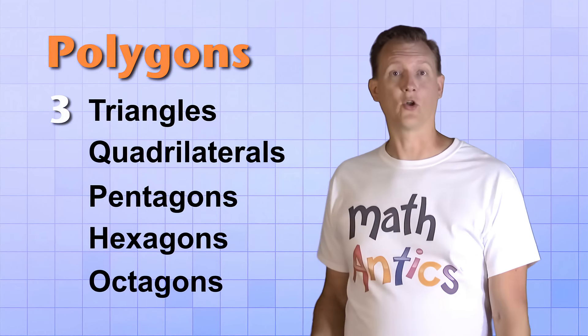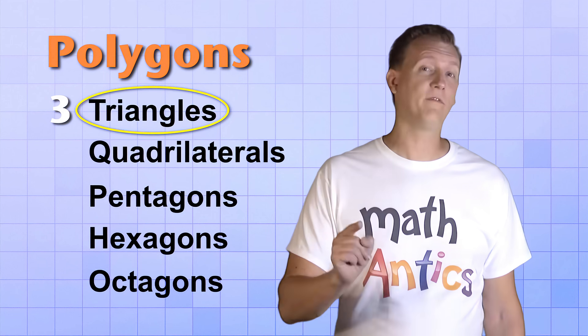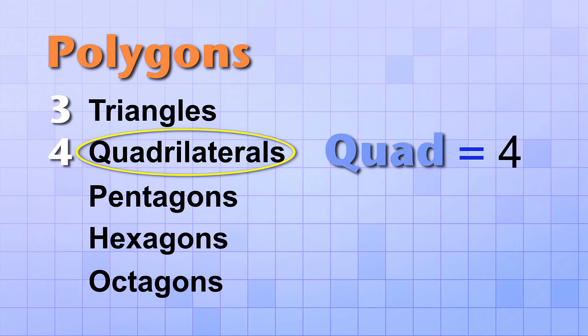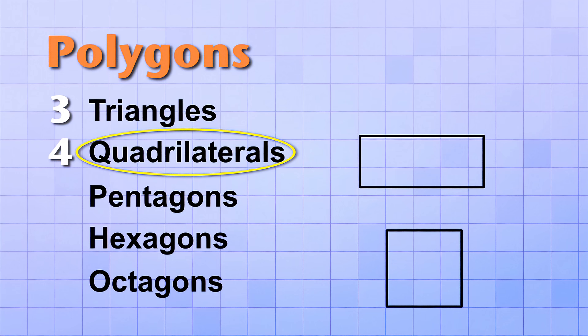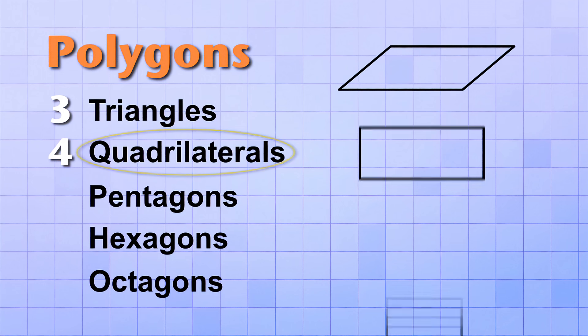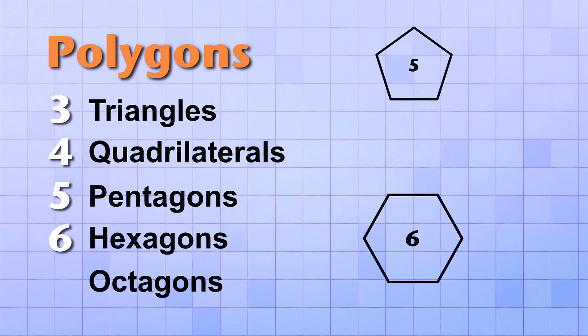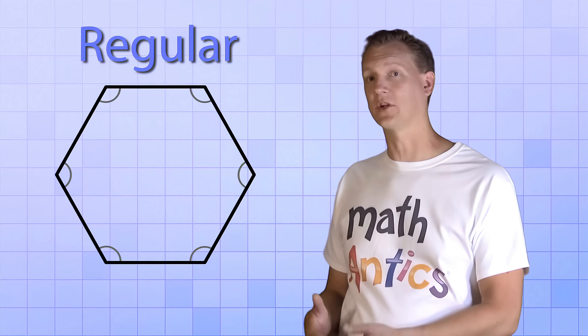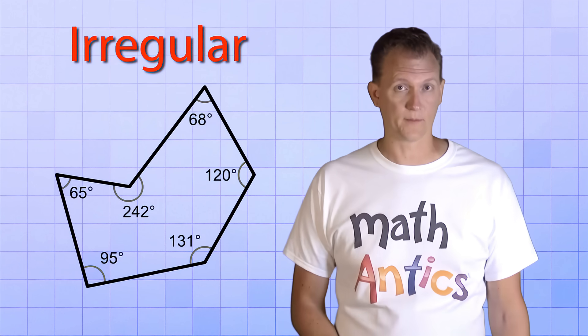Some polygons have special names depending on how many sides they have. Three-sided polygons are called triangles — triangles are so important in geometry that they'll get a whole video of their own. Four-sided polygons are called quadrilaterals. The first part, quad, means four. Quadrilaterals are shapes like squares, rectangles, and parallelograms, and they'll also get a video of their own. Five-sided polygons are called pentagons, six-sided polygons are called hexagons, and eight-sided polygons are called octagons. Polygons that have equal angles are called regular polygons, and irregular polygons if their angles are not equal. There are a lot more polygons than that, but you probably won't need to know their names.